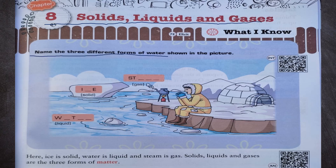Name the three different forms of water shown in the picture. First of all, we have water in the form of gas — this is steam. Water in solid form — this is ice. Water in liquid form — this is water. Ice is solid, water is liquid, and steam is gas.